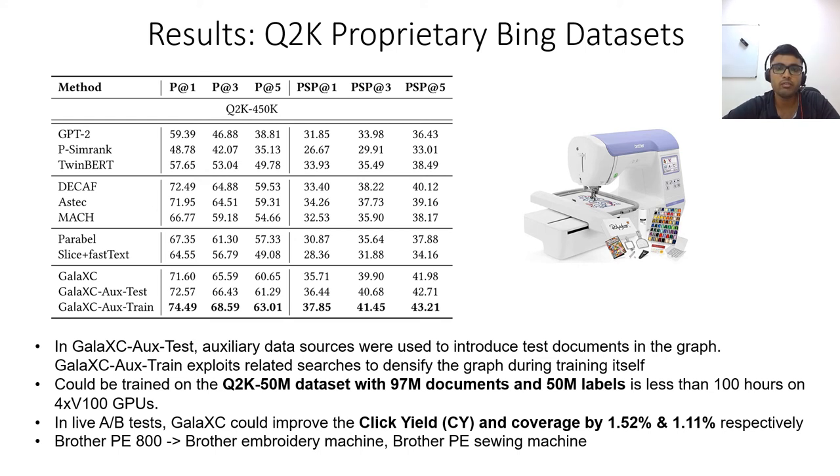And further, Galaxy Aux train, where query query links were added at training time itself. Such connections obtained from supplementary sources of data can help increase the quality and quantity of primary training data alike, particularly helping data scarce tail labels and documents. Owing to the joint label document graph, Galaxy is able to seamlessly incorporate such auxiliary sources of data.